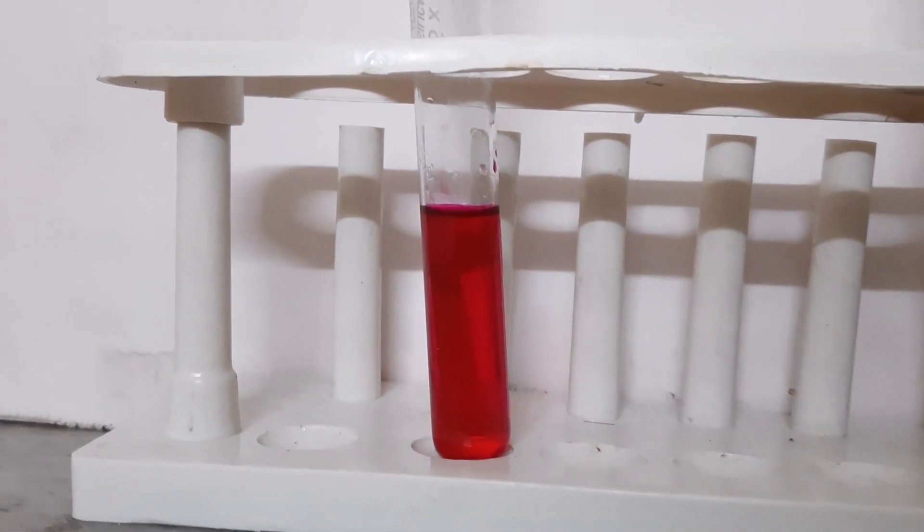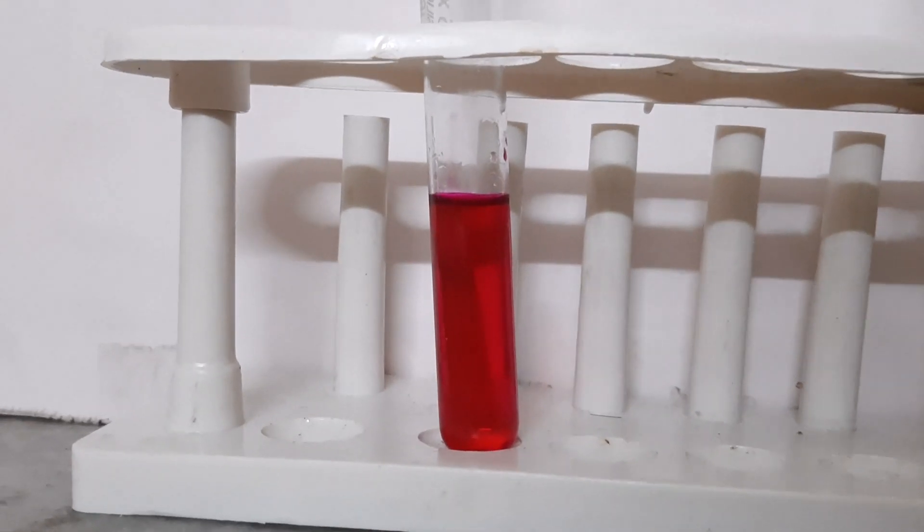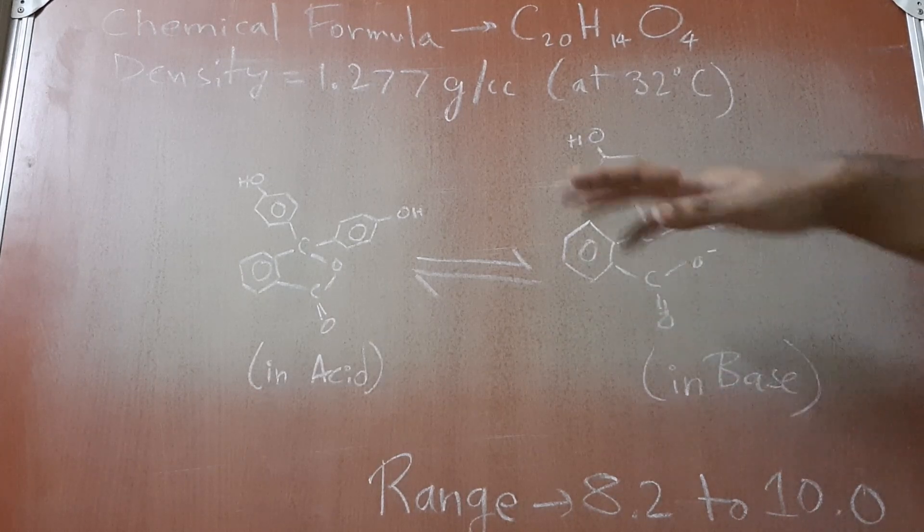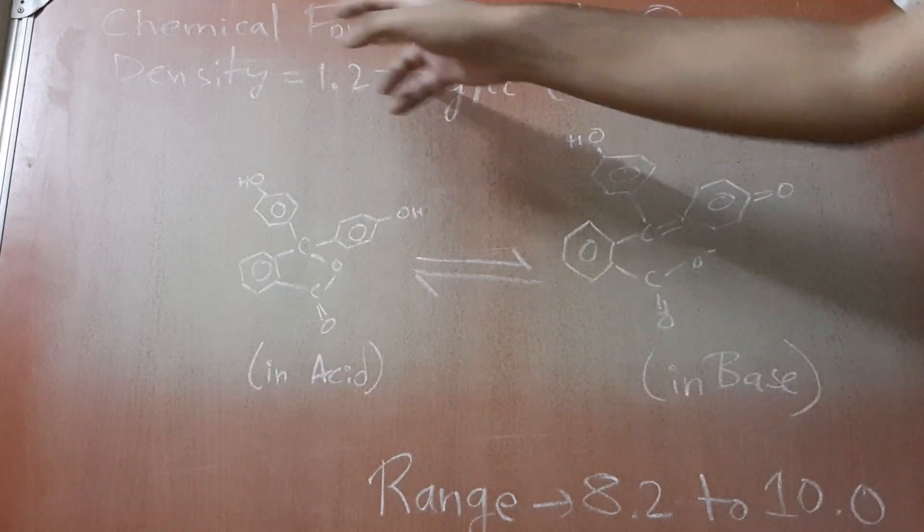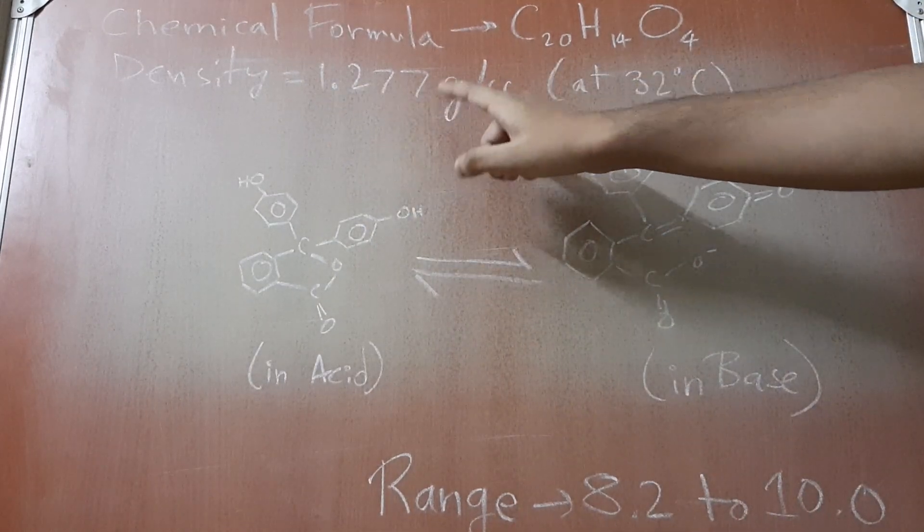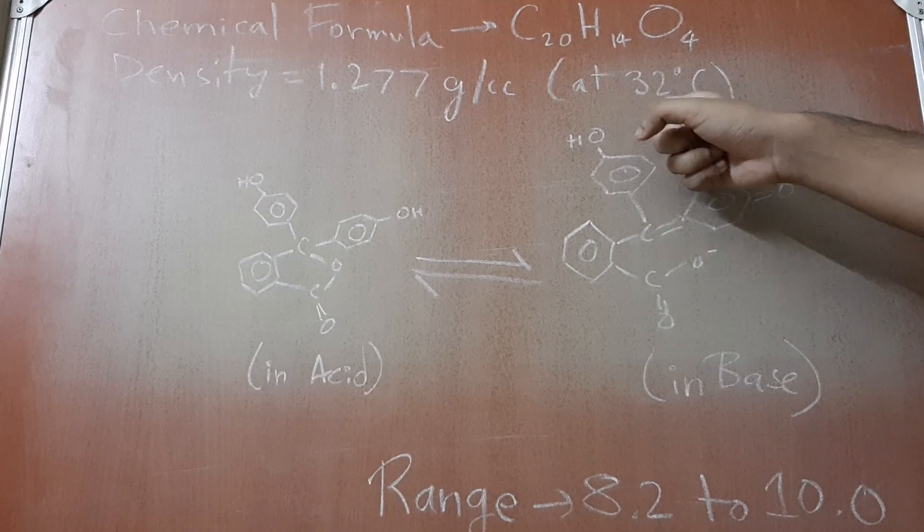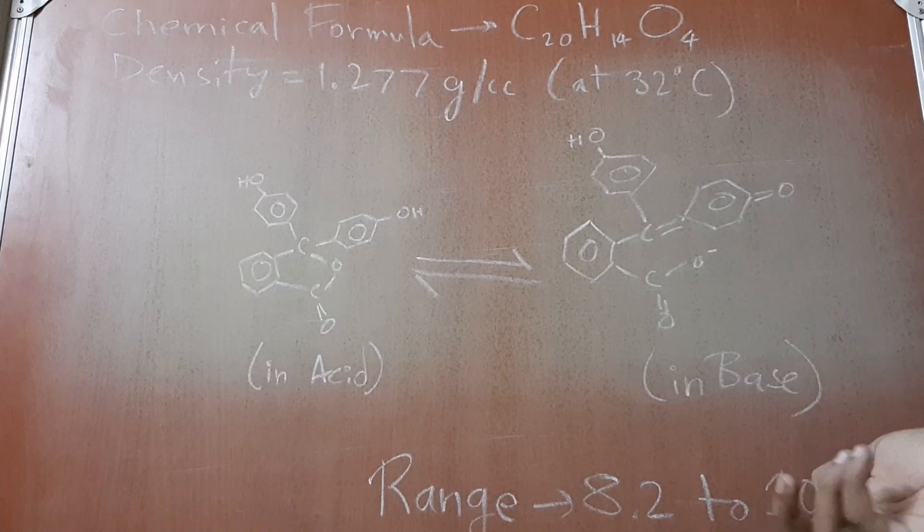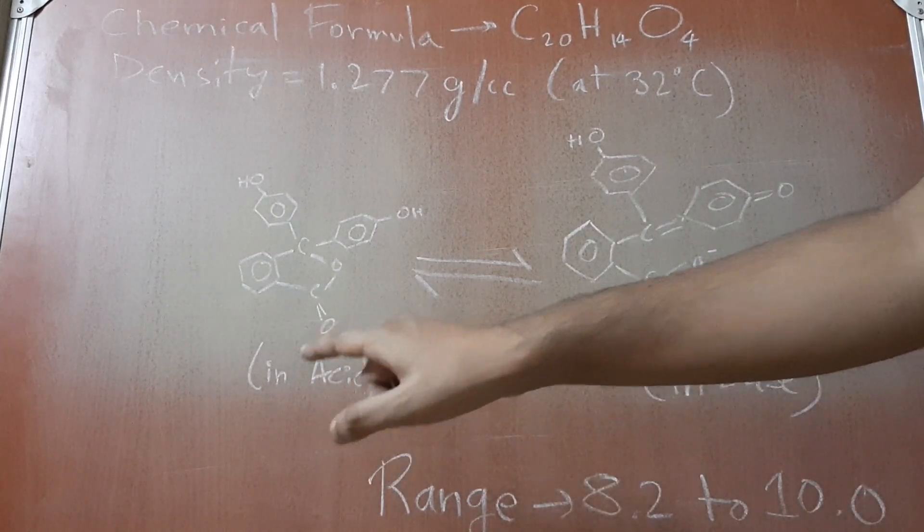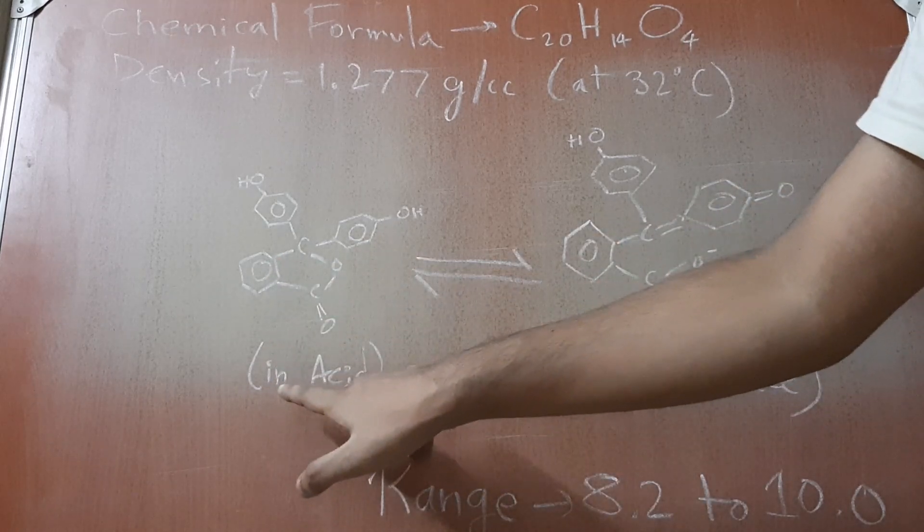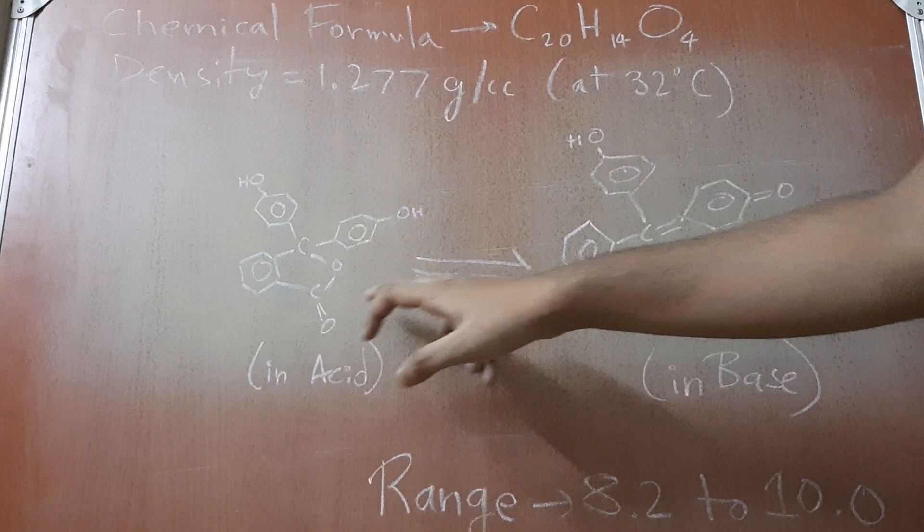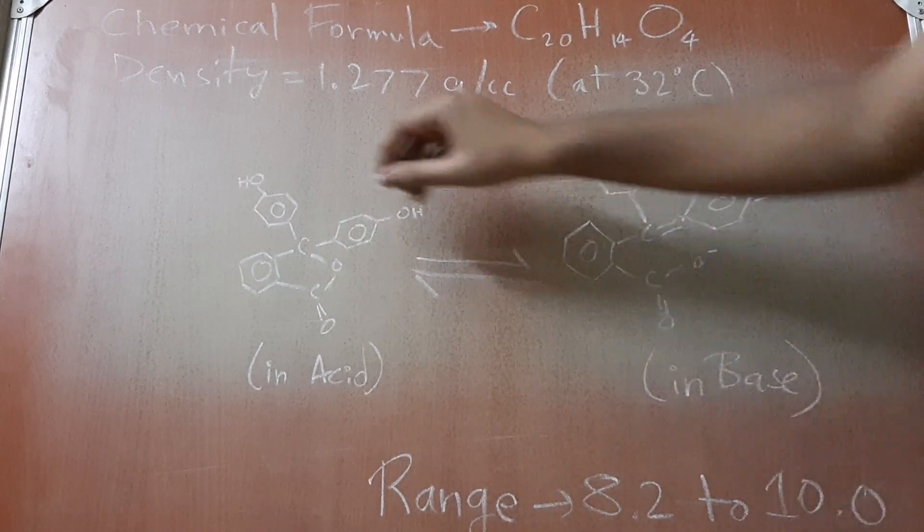Here is basically a character profile of phenolphthalein. The chemical formula is C20H14O4. The density comes out to be 1.277 grams per cc at 32 degrees centigrade—that is basically room temperature for all tropical countries. Generally, the change in color that happens is here: basically in acidic environments, when the environment is acidic, phenolphthalein stays in this format, in this structure.